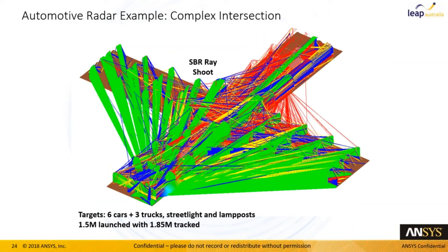To solve these larger scenarios we use a technology called the shooting and bouncing ray method. You can see different rays bouncing over the model. A ray is shot, hits a metallic or dielectric surface, which creates a current, and that current generates another ray. You can see the different generations of rays color coded in the model. The code is able to look at many details such as surface roughness of the road, lampposts, trees, and other objects in your scenarios.